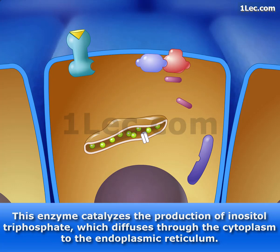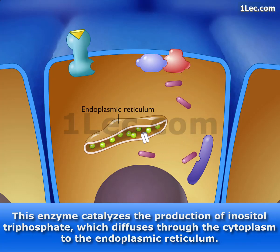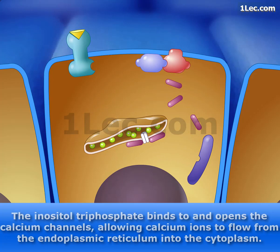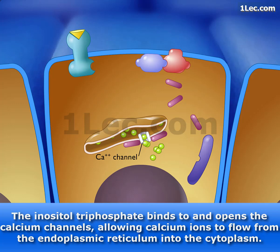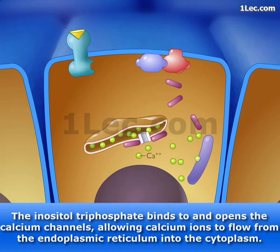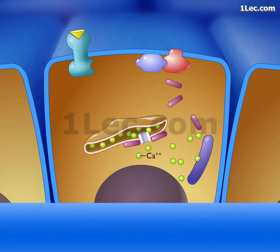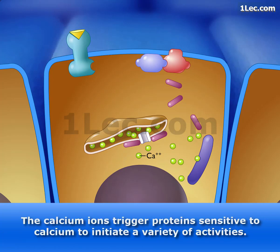The inositol triphosphate diffuses through the cytoplasm to the endoplasmic reticulum, where it binds to and opens the calcium channels, allowing calcium ions to flow from the endoplasmic reticulum into the cytoplasm. The calcium ions trigger proteins sensitive to calcium to initiate a variety of activities.